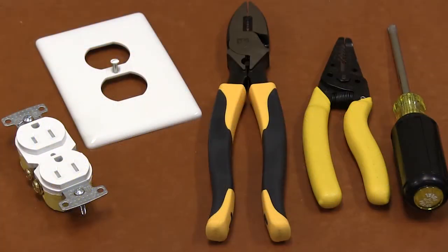Let's start by reviewing what materials you will need. You will need an X-Clamp receptacle, a wall plate, a screwdriver, a splice crimp connector, pliers, and a crimper.